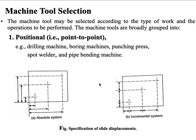Machine tools may be selected according to the type of work and the operations to be performed. Machine tools are broadly grouped into three categories: positional (point-to-point), para-axial, and continuous path. For positional machine tools — examples include drill machine, boring machine, punching press, spot welding welder, and pipe bending machines — the slides are controlled to reach a particular fixed coordinate position where machining takes place. No machining occurs until the slide movement ceases.